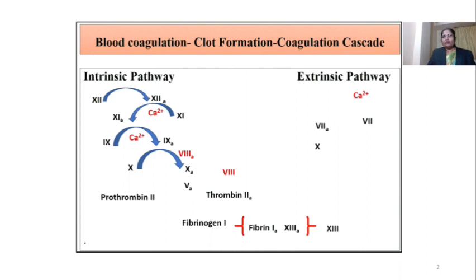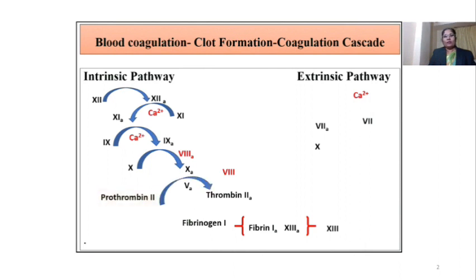The activation of factor 10 is also aided by activated factor 8. Now the question arises: where does this factor come from and how is it active? We will see that in the next part. Here, activated factor 10 acts on factor 2, that is prothrombin, and converts it into thrombin, that is active factor 2.